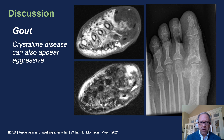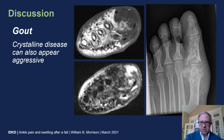One pitfall: crystalline disorders like gout can look very aggressive in the surrounding soft tissues. Here we have destruction of the first metatarsophalangeal joint with surrounding fluid and soft tissue edema, which can mimic the appearance of infection.